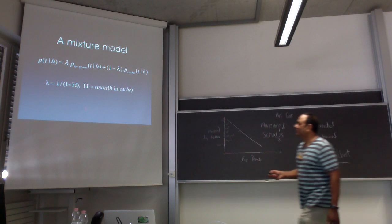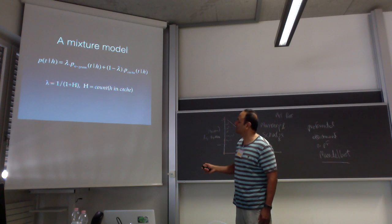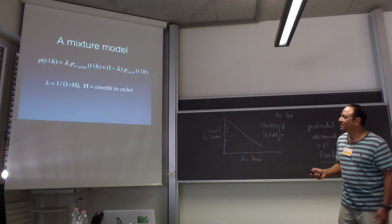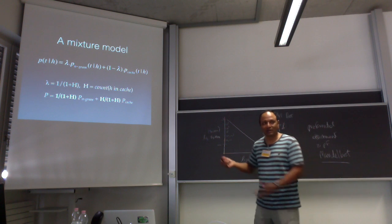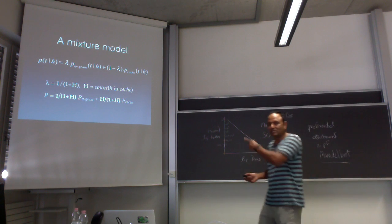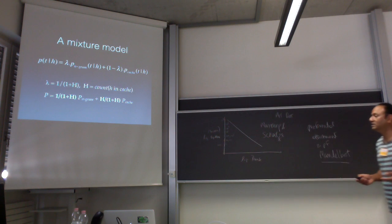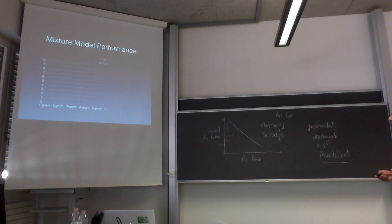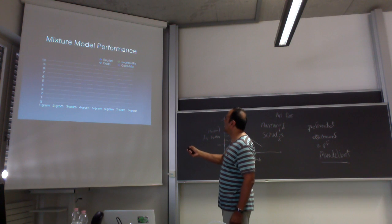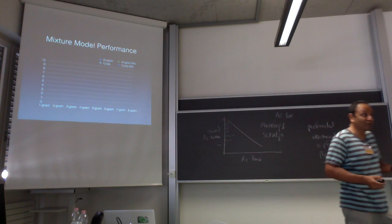The lambda is set based on how often we see the context in the cache: λ = 1 / (1 + h), where h is the count of the token in the cache. This work is from FSE 2014, with postdoc Jarrod Tool as lead author. We're comparing English and code, with and without the cache, to gauge how much improvement the cache provides.